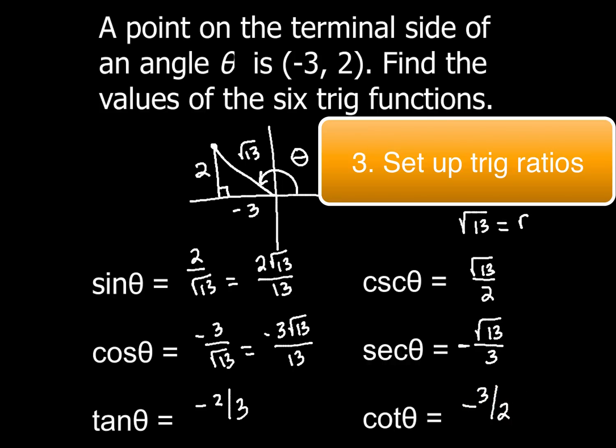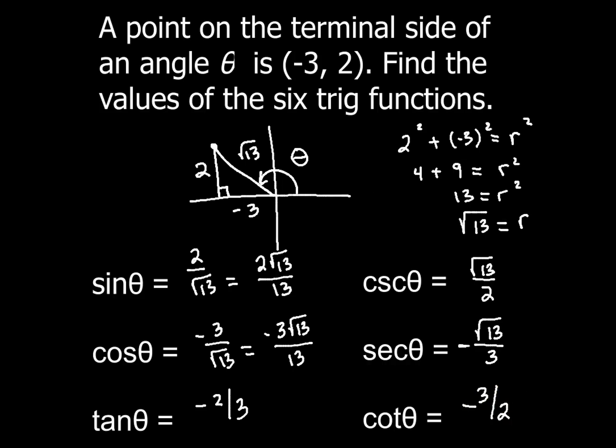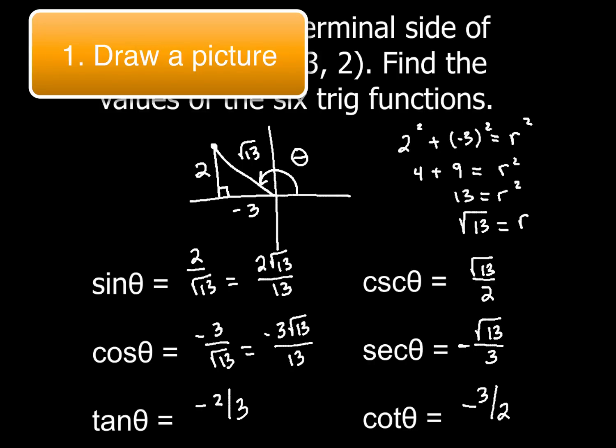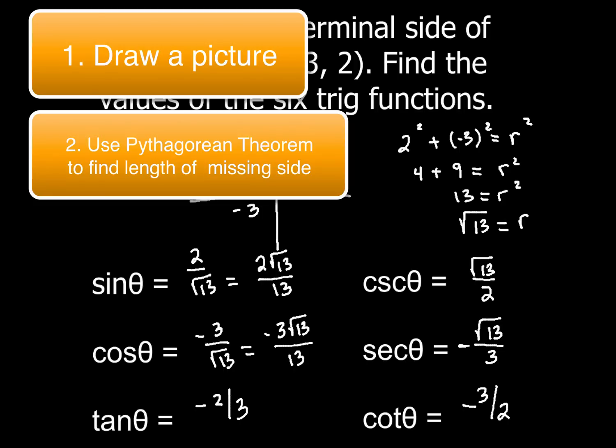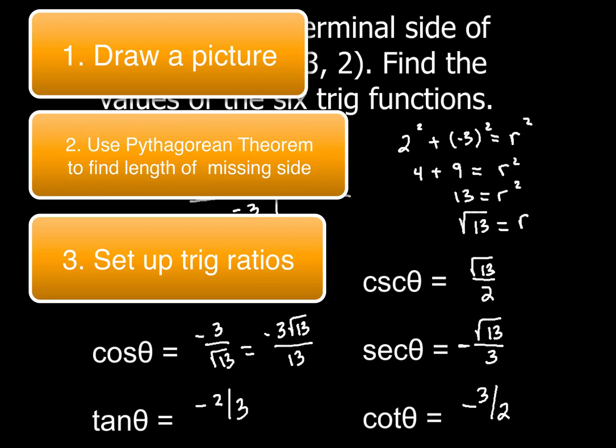So that's how you find a point on a, when you're given a point on a terminal side, that's how you find the 6 trig functions. So there's 3 things you've got to do. First is draw a picture. Second is solve for the missing side using Pythagorean theorem. The third thing that you want to do is go ahead and set up your trig ratios, and that's it.